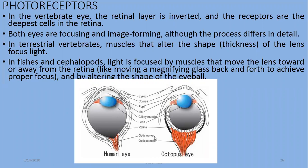In vertebrate eyes, the retina is inverted, and the receptors are the deepest cells in the retina. Both the octopus eye and the vertebrate eye are focusing and image-forming, although the process differs in detail. In vertebrates, ciliary muscles are responsible for the movement of the lens — this is the lens shown in the diagram. On the right side is the octopus, and on the left is the human eye, where the lens is controlled by ciliary muscles.